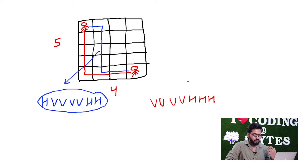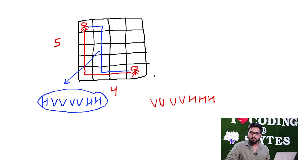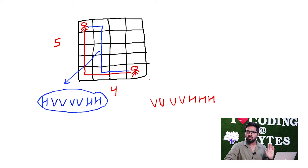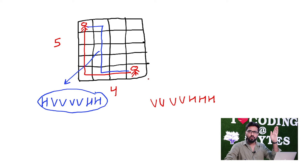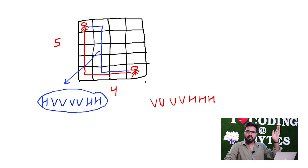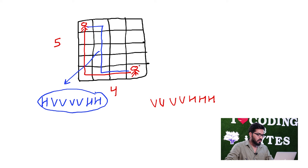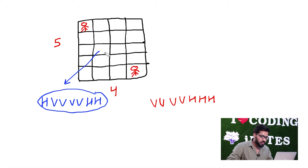So, what we are supposed to do is: we have to print all the possible paths, given the number of rows and number of columns. We are given number of rows and number of columns and we have to print all the possible paths from top left to bottom right. So, how do we think about this in terms of recursion?